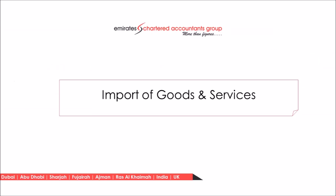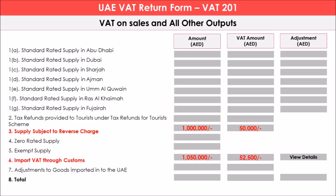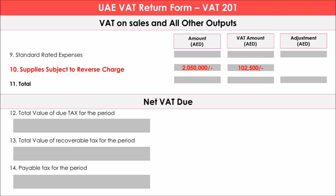Now let us see how both import of goods and import of services are recorded together in the UAE VAT return form. For example, import of goods is one million and import of services is one million. Under box number 3, one million will be displayed and the tax liability will be fifty thousand. Under box number 6, one million fifty thousand will be automatically disclosed and the tax liability is fifty two thousand five hundred. Both amounts can be reversed under box number 10 — two million fifty thousand, and the combined tax liability of one hundred and two thousand five hundred — making the net tax payable on imports nil.